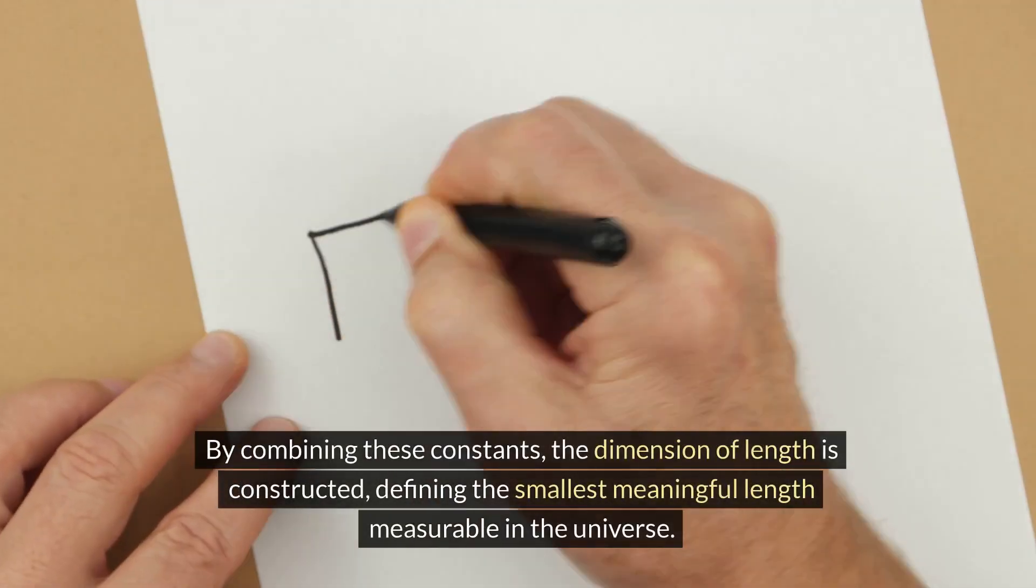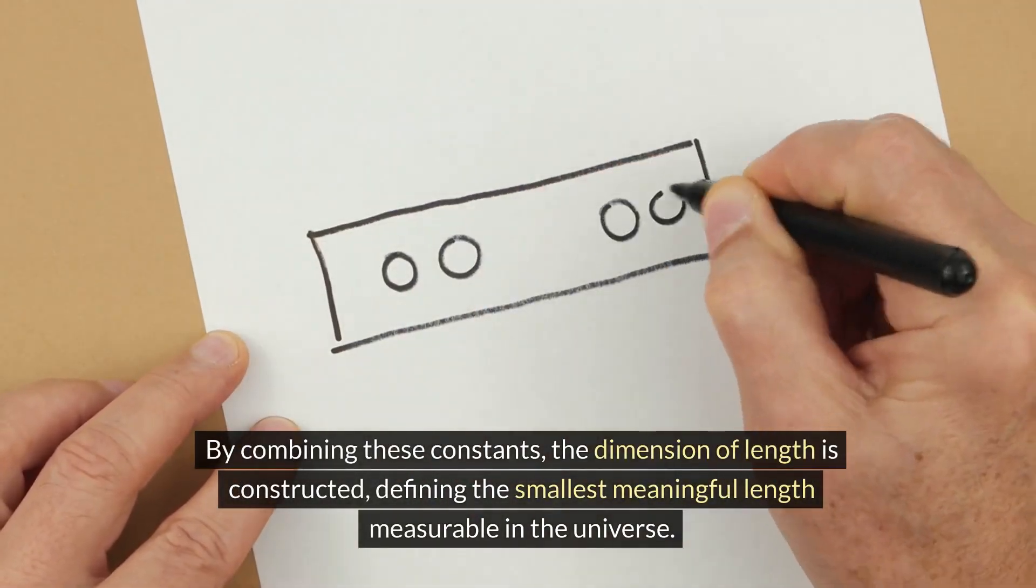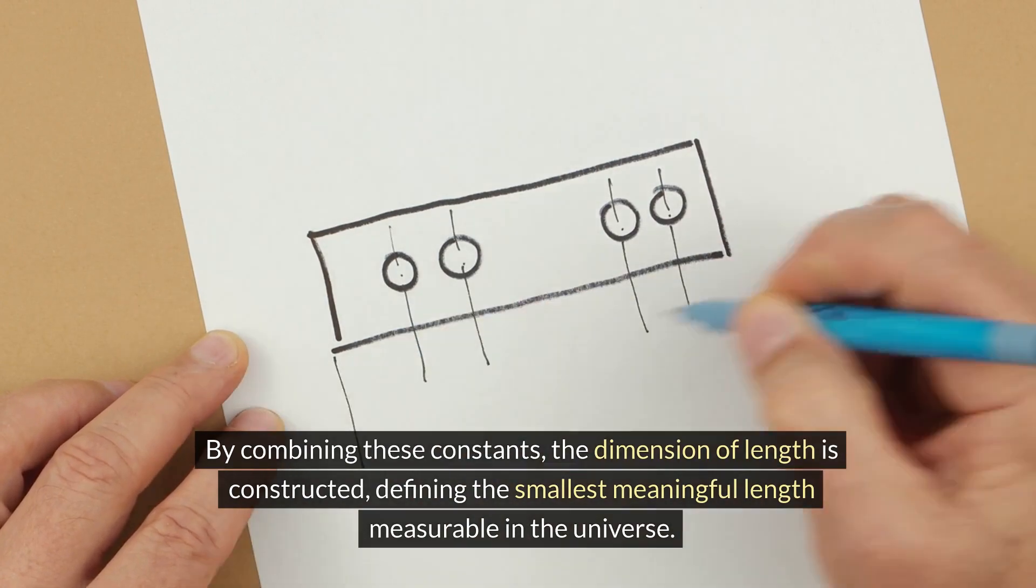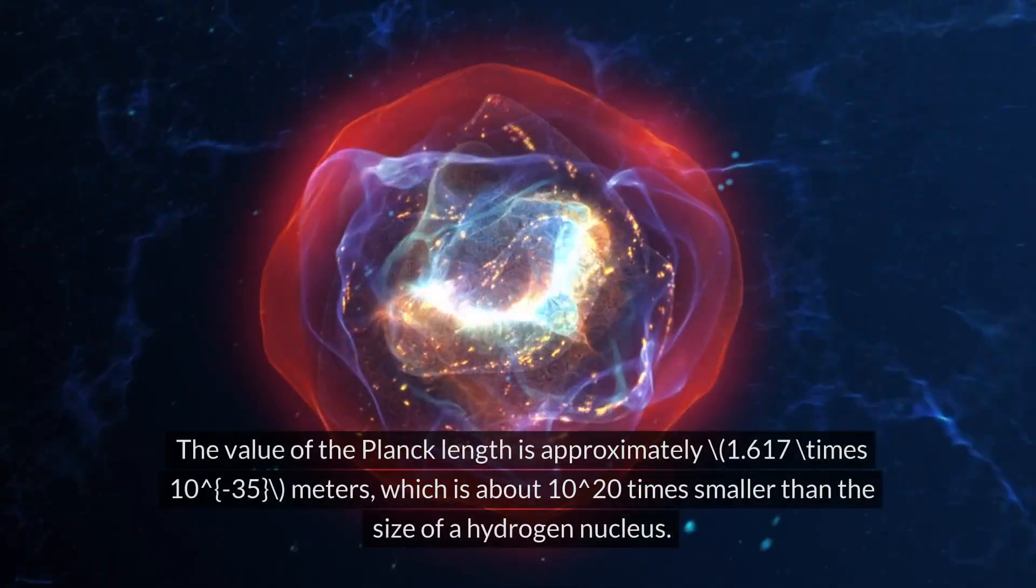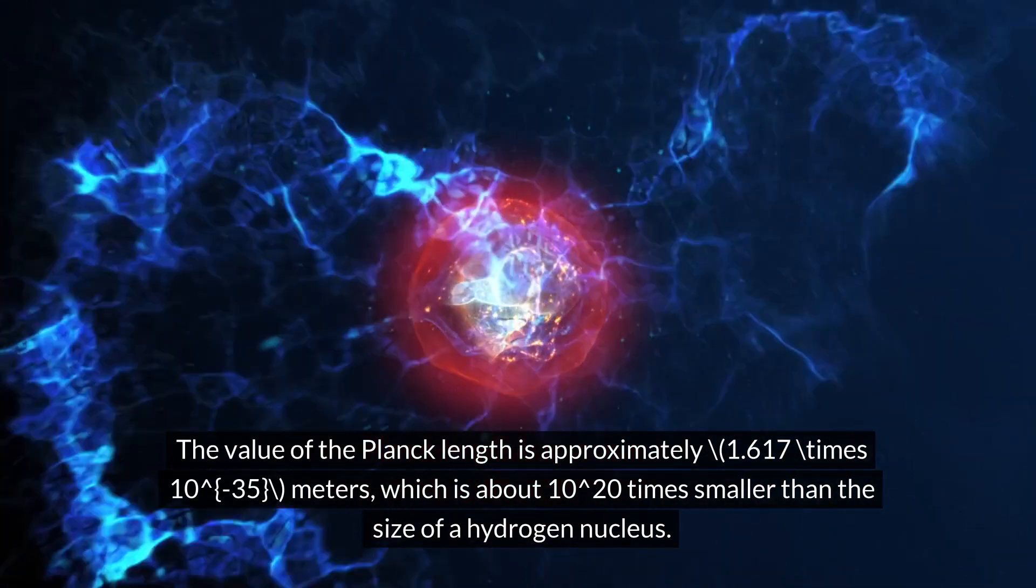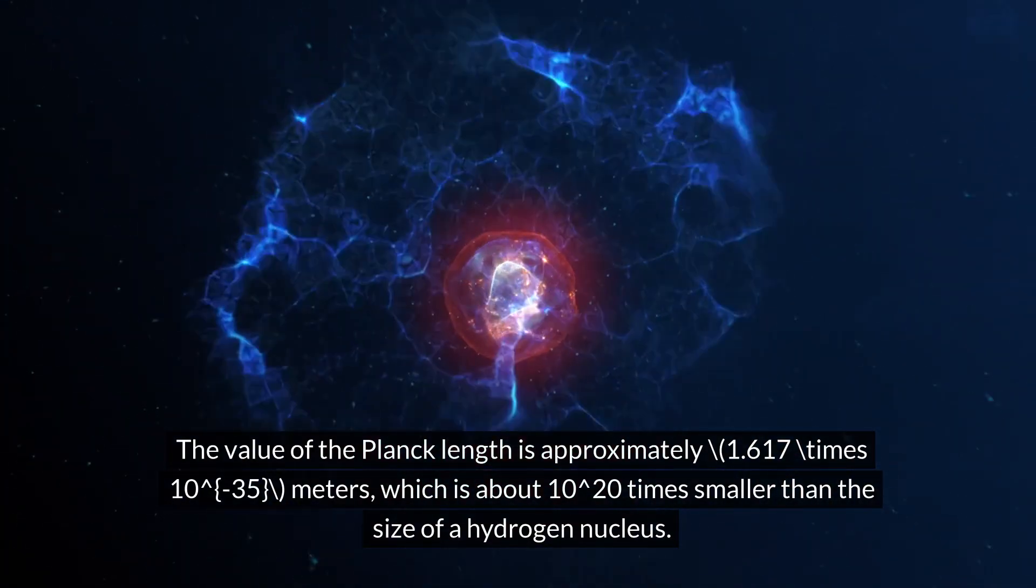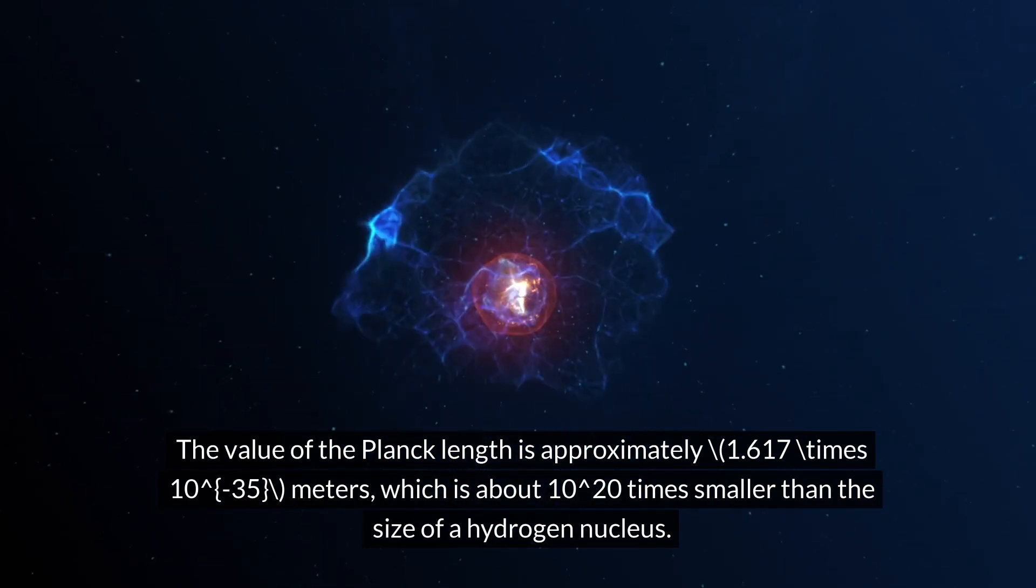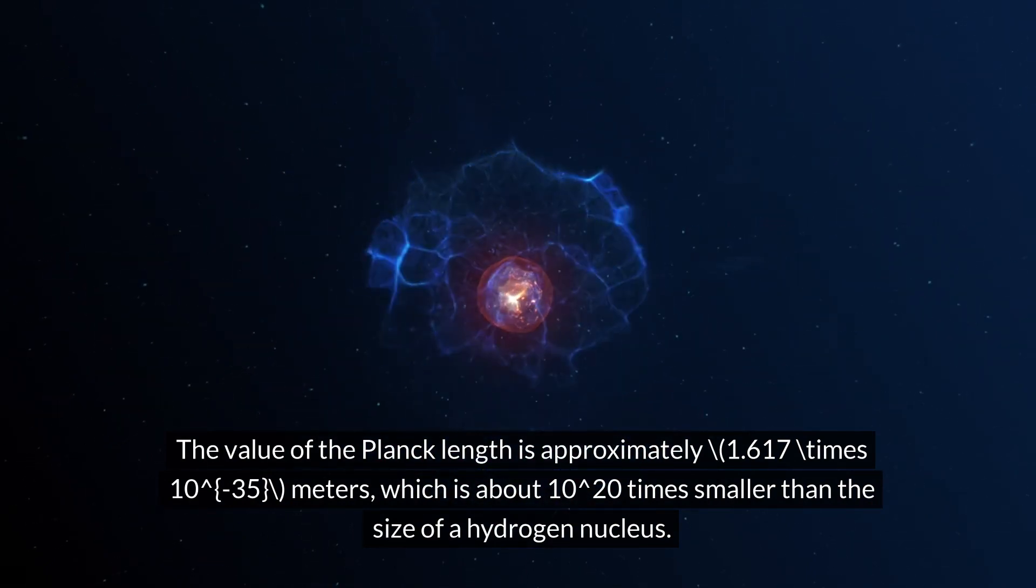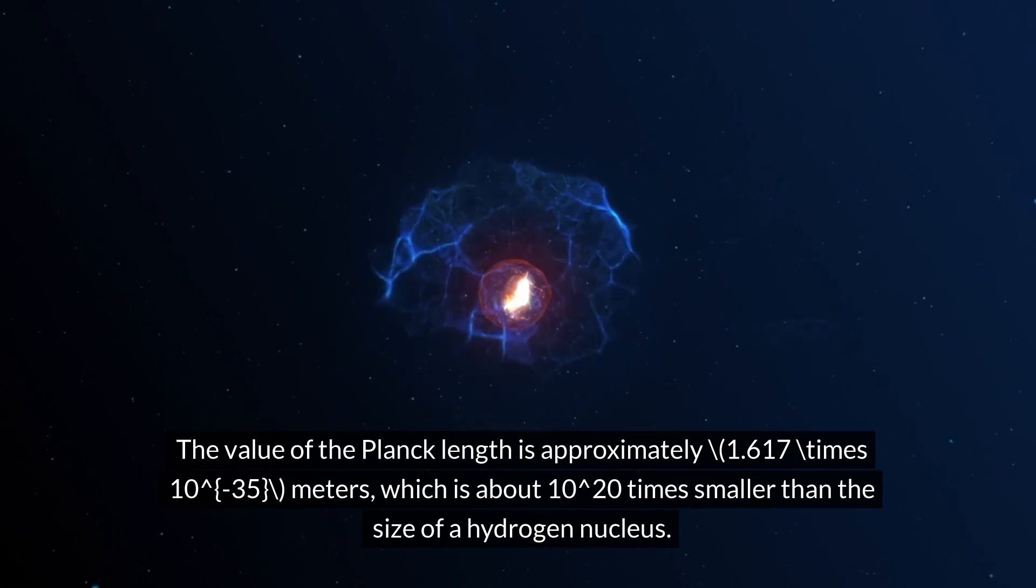By combining these constants, the dimension of length is constructed, defining the smallest meaningful length measurable in the universe. The value of the Planck length is approximately 1.617 times 10^(-35) meters, which is about 10^20 times smaller than the size of a hydrogen nucleus.